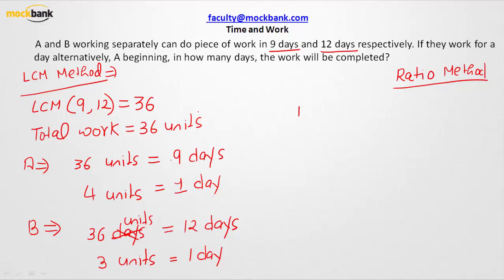A is going to start the work. The first day A would come and contribute 4 units. Second day B comes and does 3 units. So in 2 days, the total work that will get completed is 7 units.